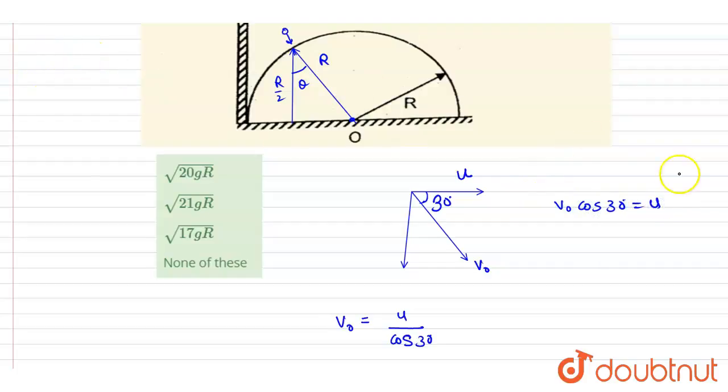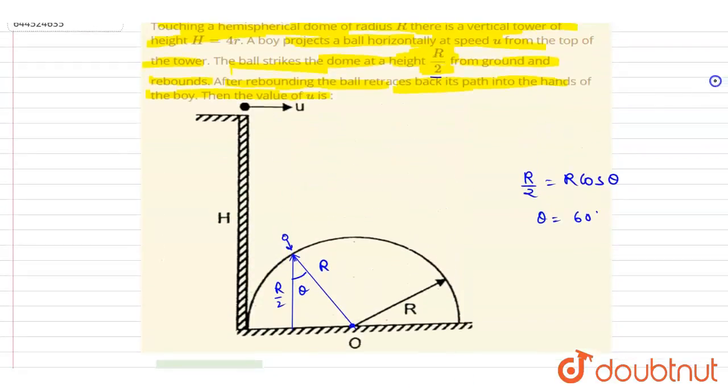Now if you see here how much it traveled, this whole height is 4R. Out of this 4R, you removed R by 2, so 8R by 2 minus R by 2 is 7R by 2. It traveled this much. So after traveling this much, what will be the vertical velocity? You can get that by writing the third equation of motion.